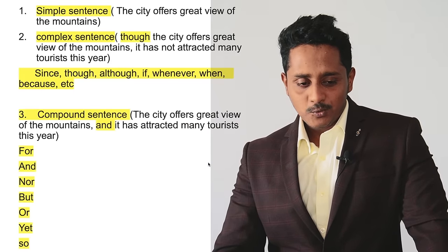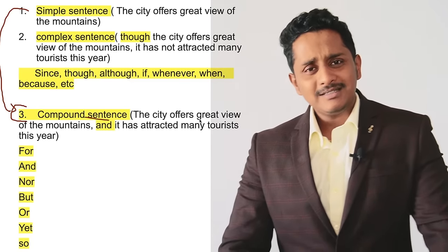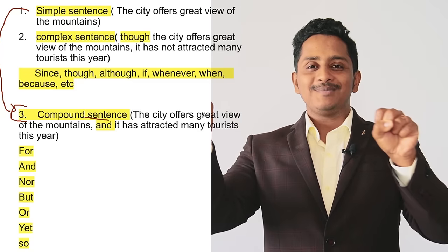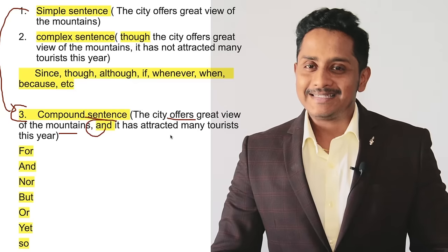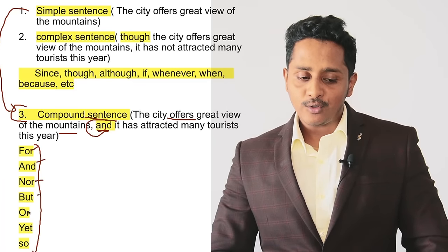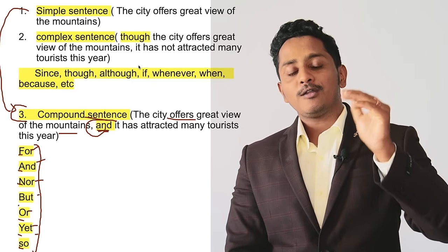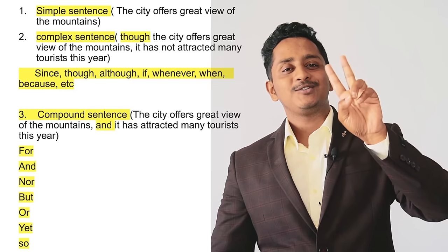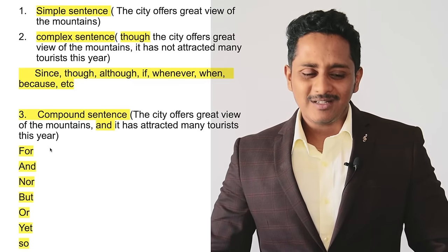What's a compound sentence? Compound means compounding — addition. One simple sentence plus another simple sentence joined together is a compound sentence. For example: 'The city offers great view of the mountains AND it has attracted many tourists this year.' The AND can be replaced with any of the FANBOYS: For, And, Nor, But, Or, Yet, So. Any of these connectors — called coordinating conjunctions — make it a compound sentence. So compound sentence is easy: write simple sentence twice, add a connector in between.